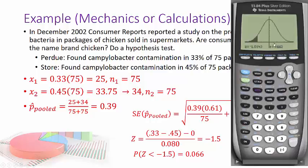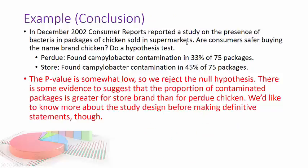Now with this P value, that's right on the edge. So here's the conclusion your book suggested. It said the P value is somewhat low. So we reject the null hypothesis. You could have actually failed to reject here if you felt so inclined. Depending on what alpha level you set. Notice how they're hedging here, though. There's some evidence to suggest that the proportion of contaminated packages is greater for store brand than for Perdue chicken. We'd like to know more about the study design before making definitive statements, though. See how they're totally hedging because we're kind of close to that 0.05.